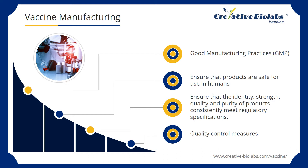Different vaccine types require different actual production processes. For example, the specific ingredients added to a viral vaccine and a bacterial vaccine are different. In addition, manufacturers need to carefully identify and store the primary seed virus or bacteria used to initiate each production run to ensure consistency in the final product.